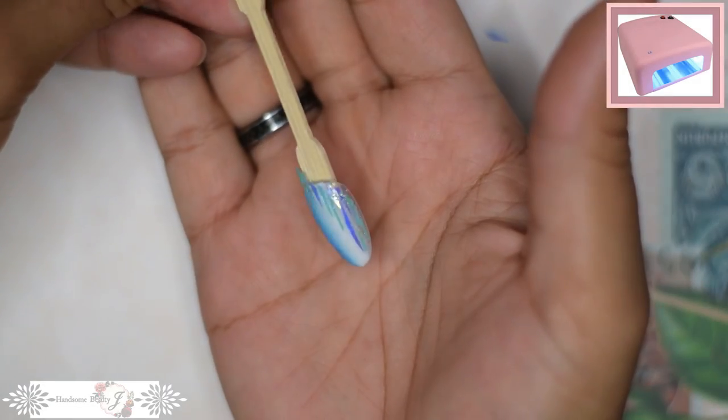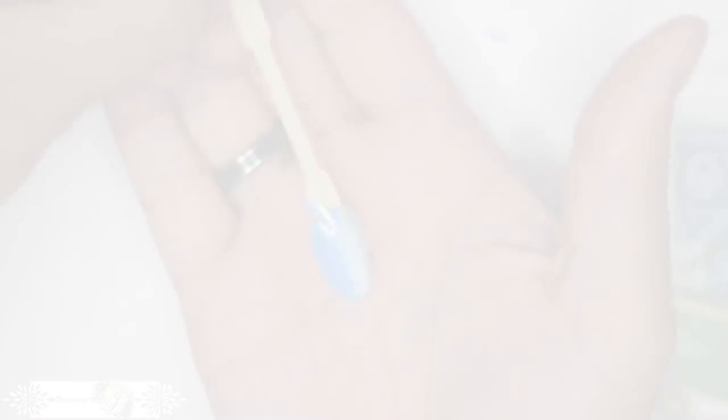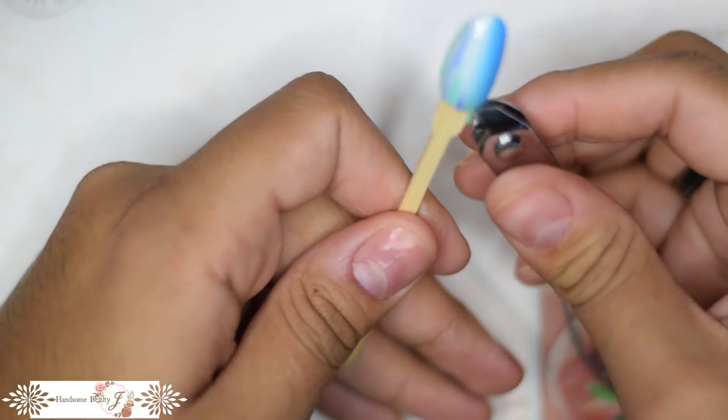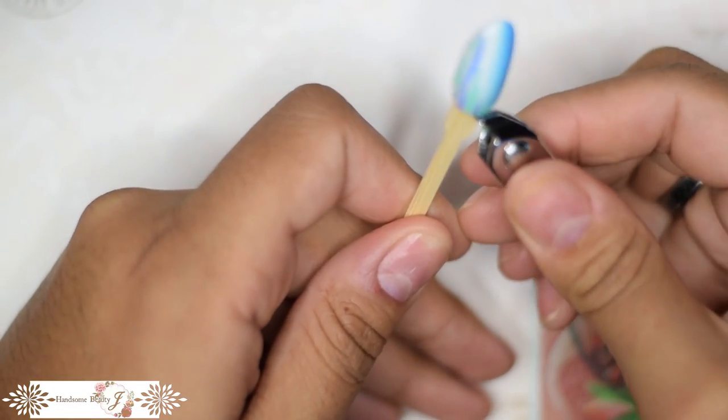Once you've placed all of your pieces, put it in the lamp to cure or let your polish dry. When it's cured, you can clip off or file the overhanging cellophane pieces.